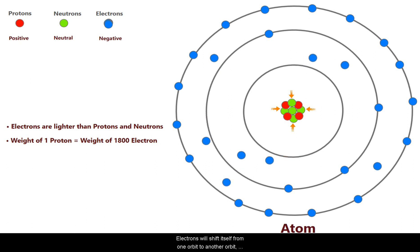Electrons will shift itself from one orbit to another orbit based on the energy level it has. And we can influence this electron movement based on the orbits by passing energy to an atom from external source. Here, electrons will absorb the energy and will jump from one orbit to another orbit based on the gained energy.